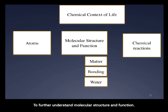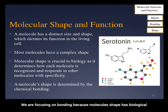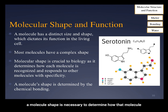To further understand molecular structure and function, we need to review chemical bonding. A molecule's shape is determined by chemical bonding. We are focusing on bonding because a molecule's shape has biological value. Each biological molecule has a specific shape that allows it to do its function — the structure-function relationship. And for most molecules, that shape is complex. A molecule's shape is necessary to determine how that molecule will react with other molecules to result in a specific function.